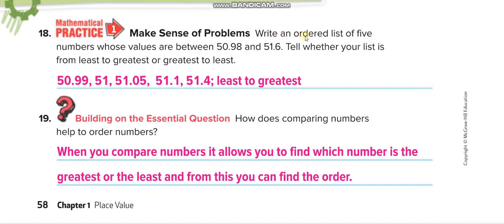The next question asks you to write any ordered list of five numbers whose values are between 50.98 and 51.6. I'll write from least to greatest — you give me from greatest to least in the comments. My answer: 50.98, 50.99, 51.0, 51.05, 51.1, 51.2, 51.3, 51.4, 51.5. Pick any five!